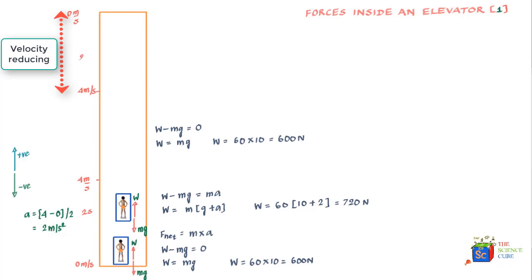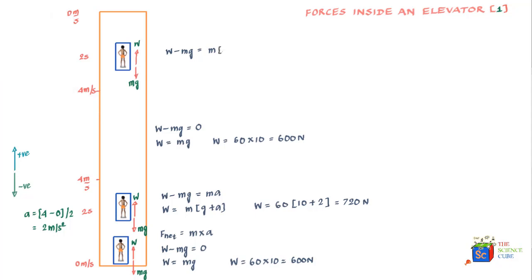This reduction happens over a time period of two seconds. The forces acting are mg downward and the scale force (weight) upward. Writing Newton's equation: W minus mg equals m times a, and in this case the acceleration is negative because velocity is reducing. So W equals m times (g minus a), meaning your weight actually reduces because of the deceleration — you get a smaller value, effectively reducing your weight.